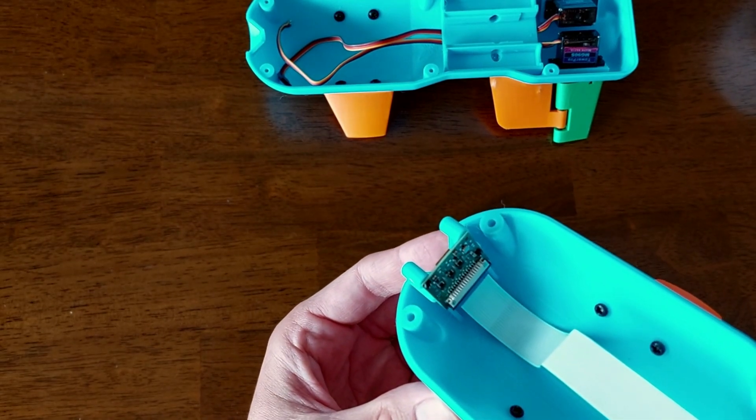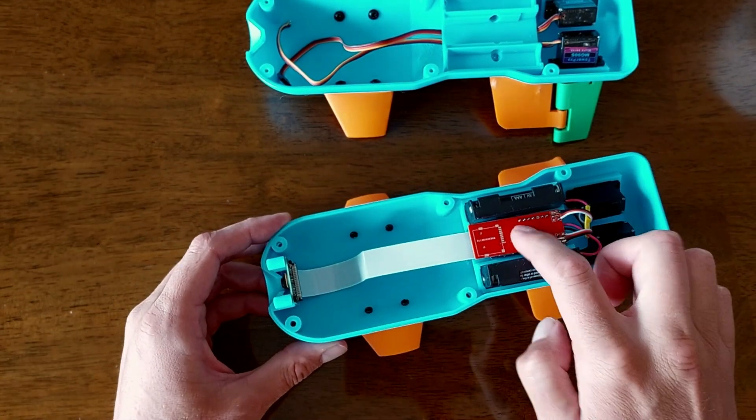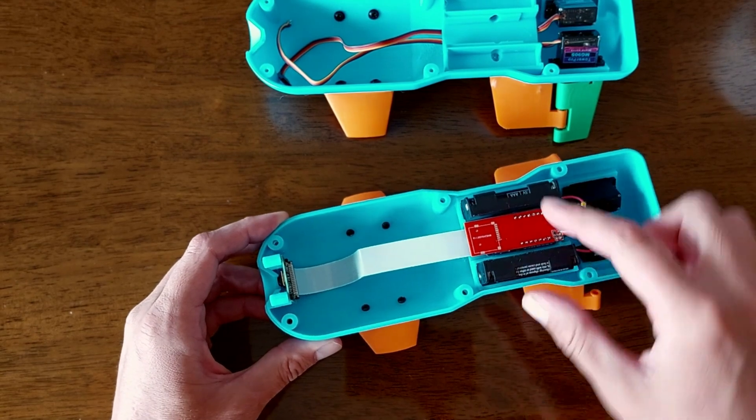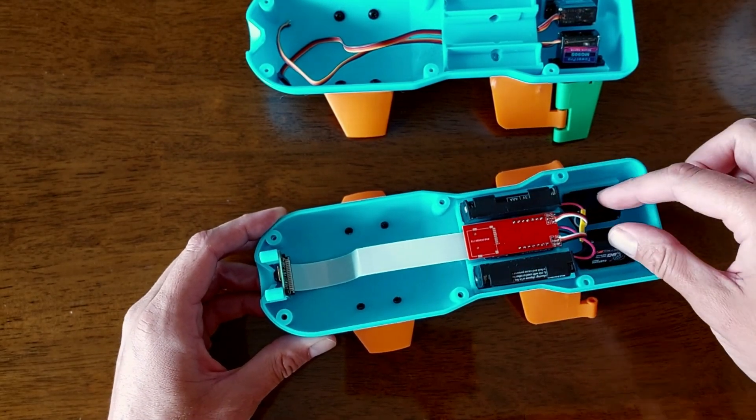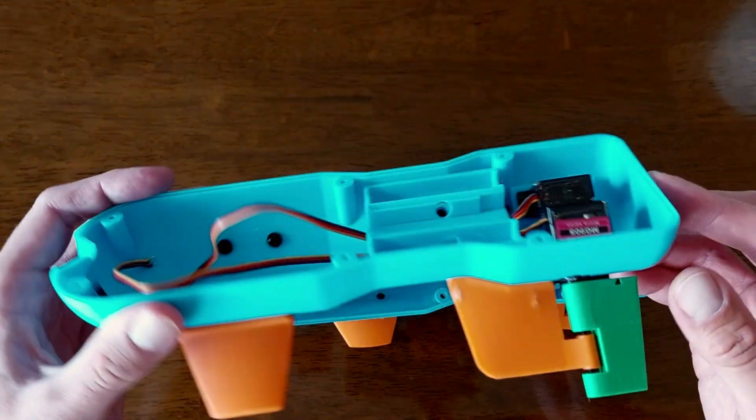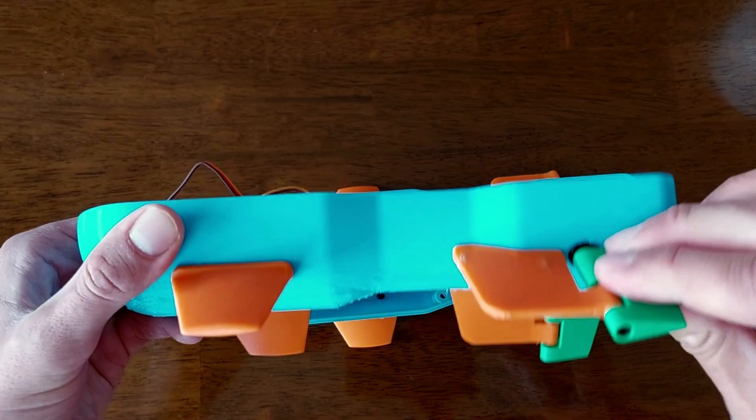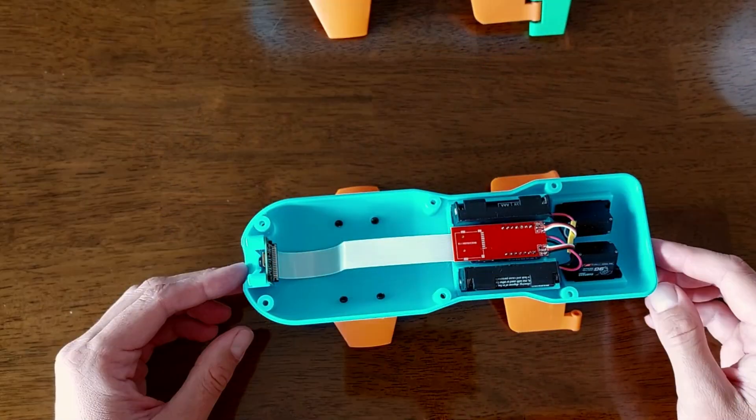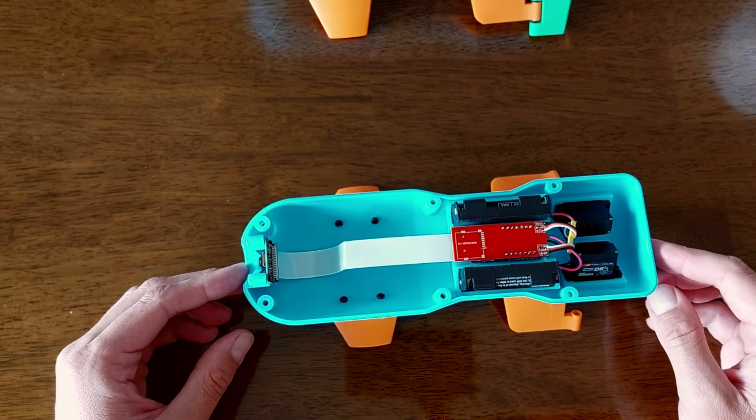So, camera on the front end. Controller here. Batteries. And servos. Pretty self-explanatory isn't it?